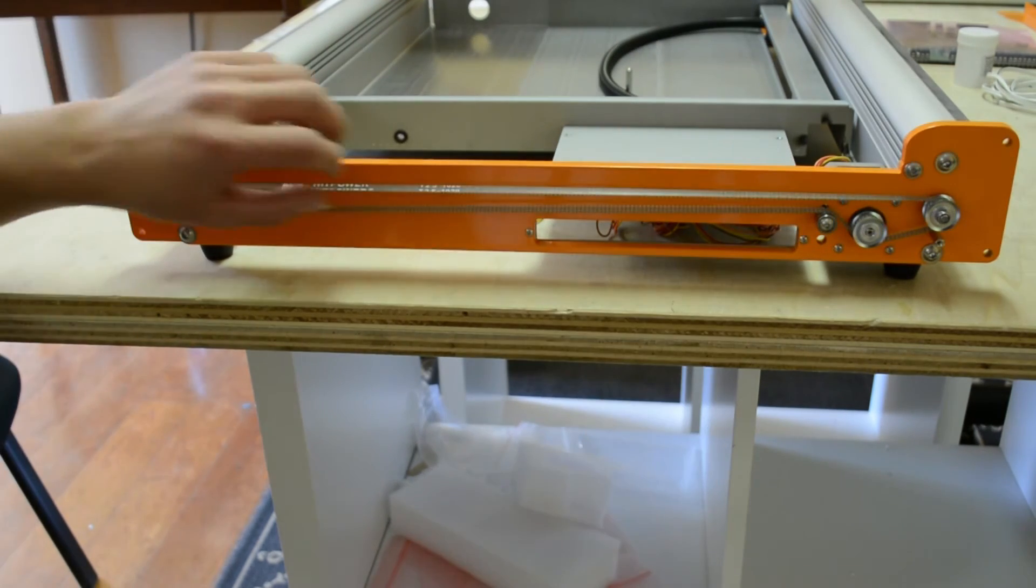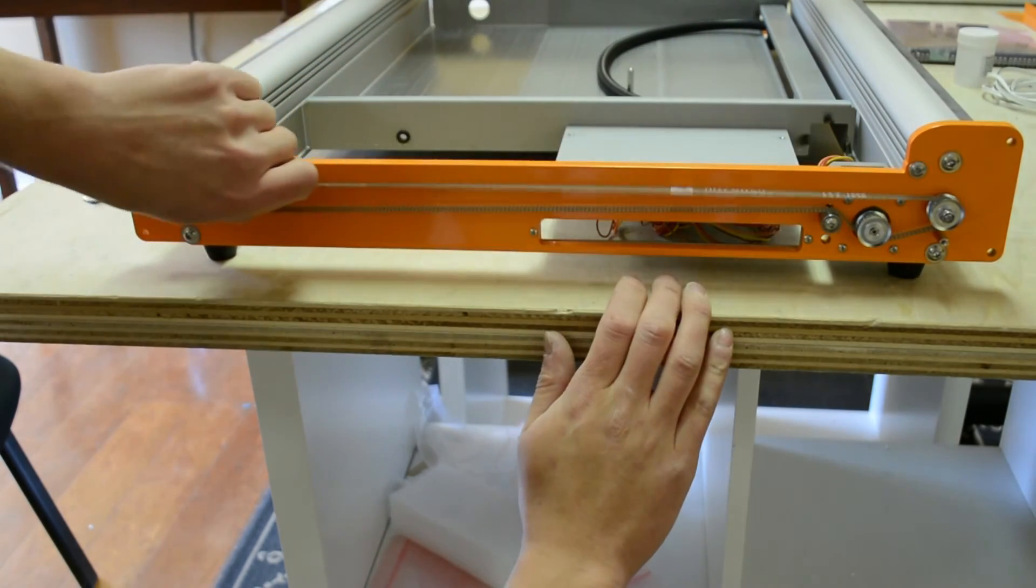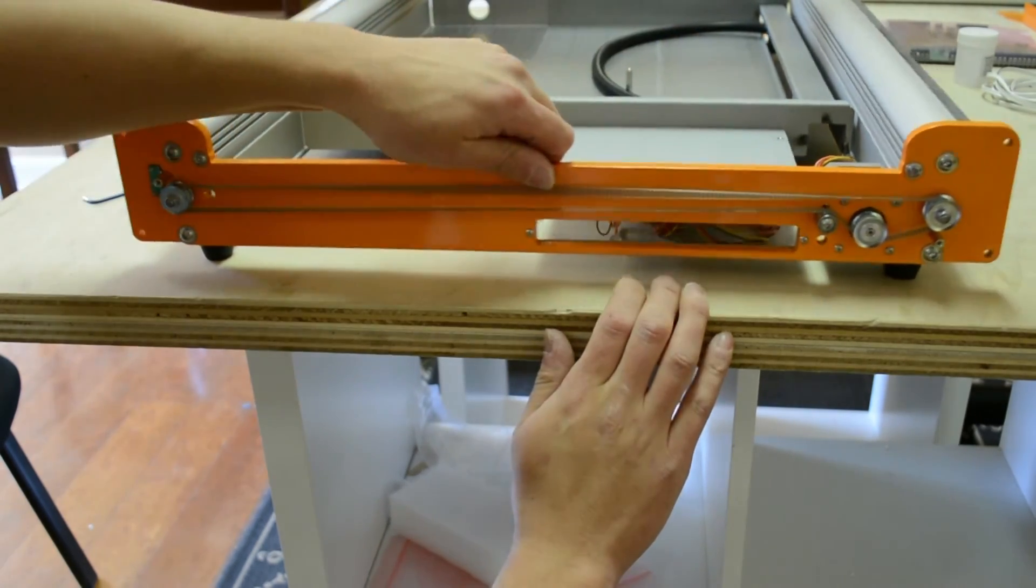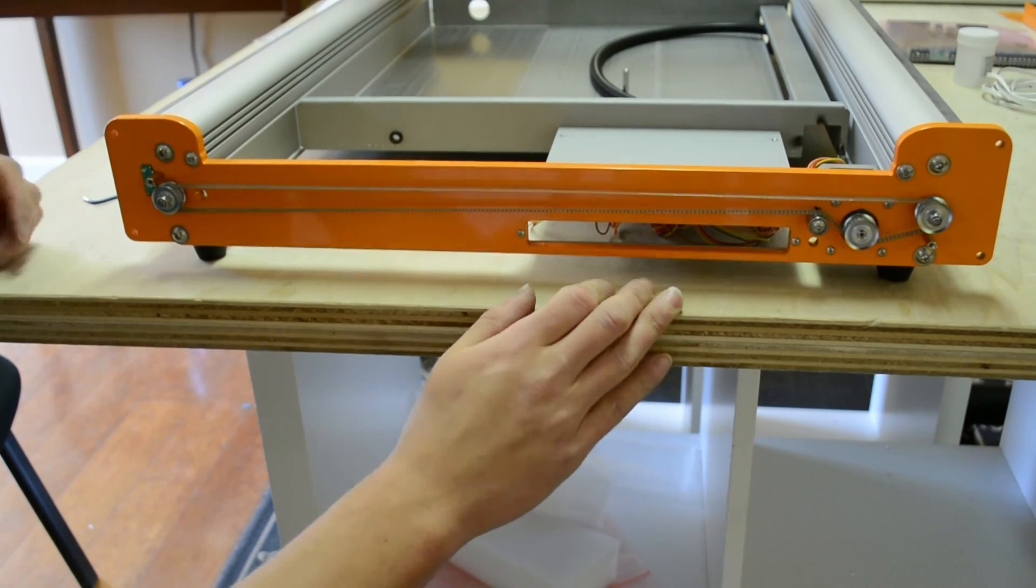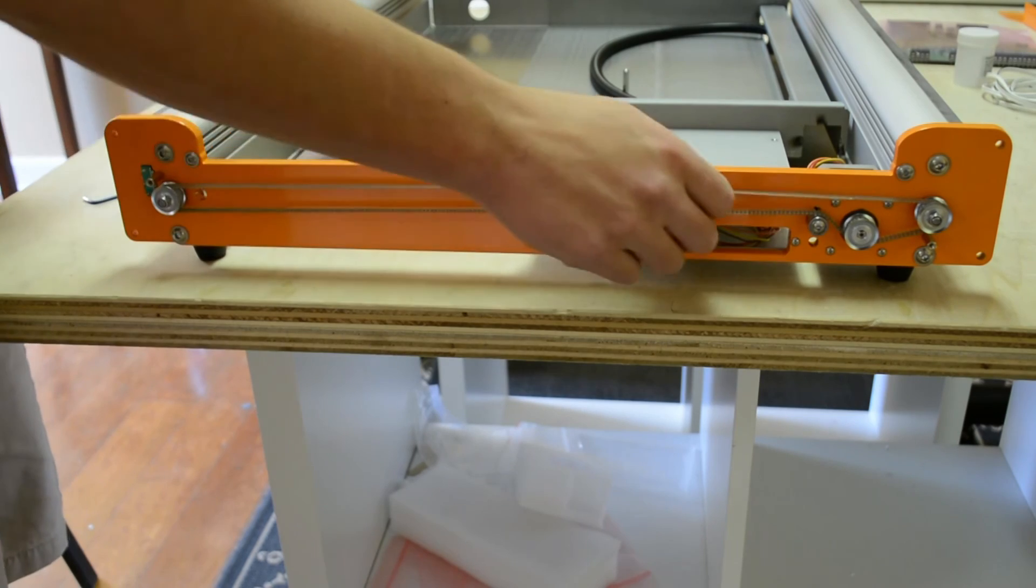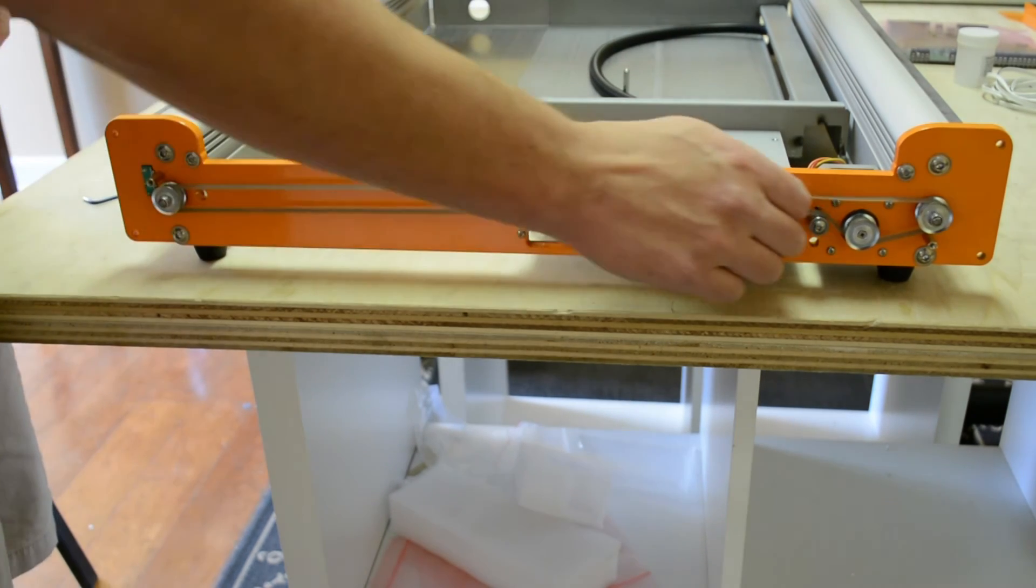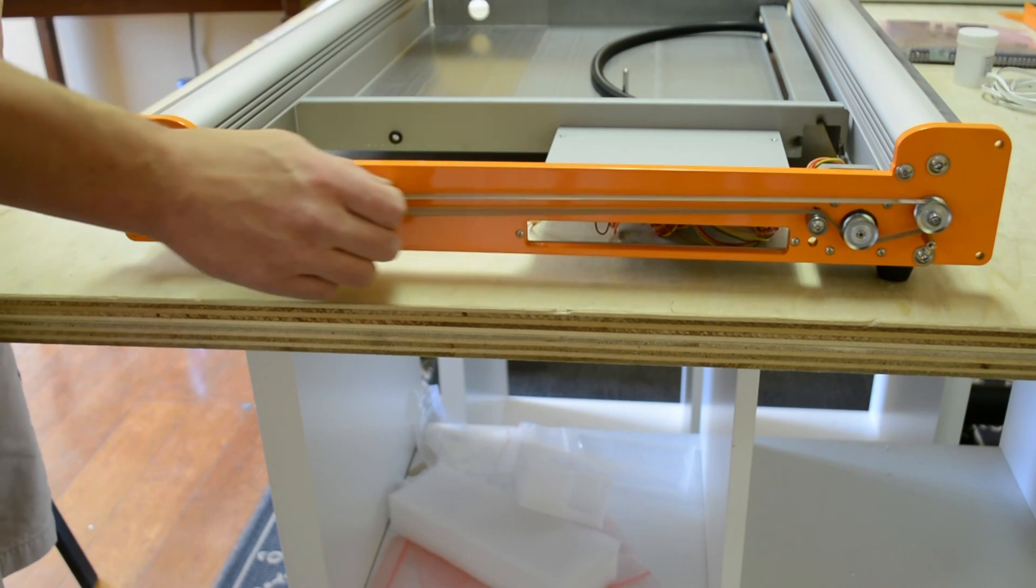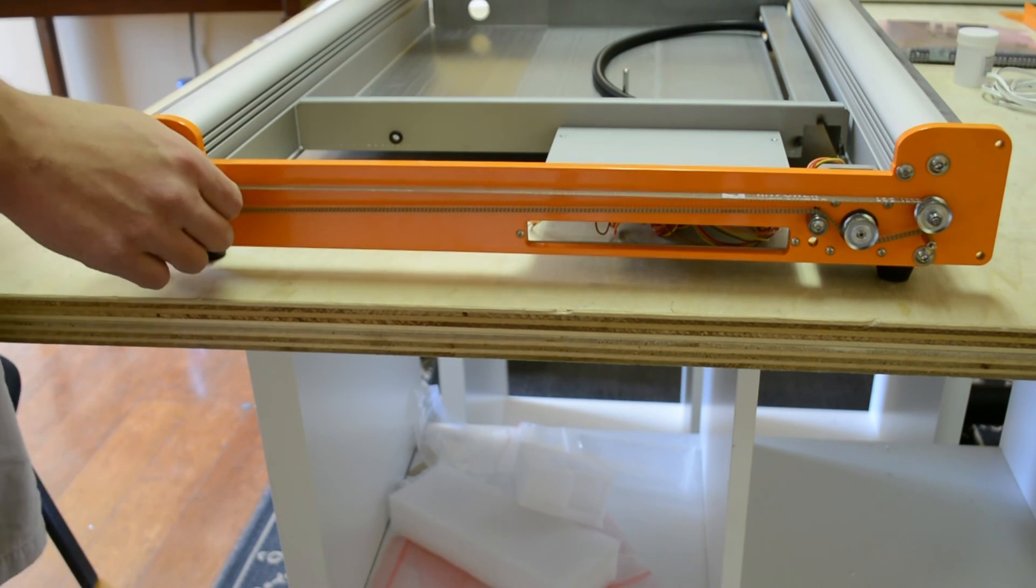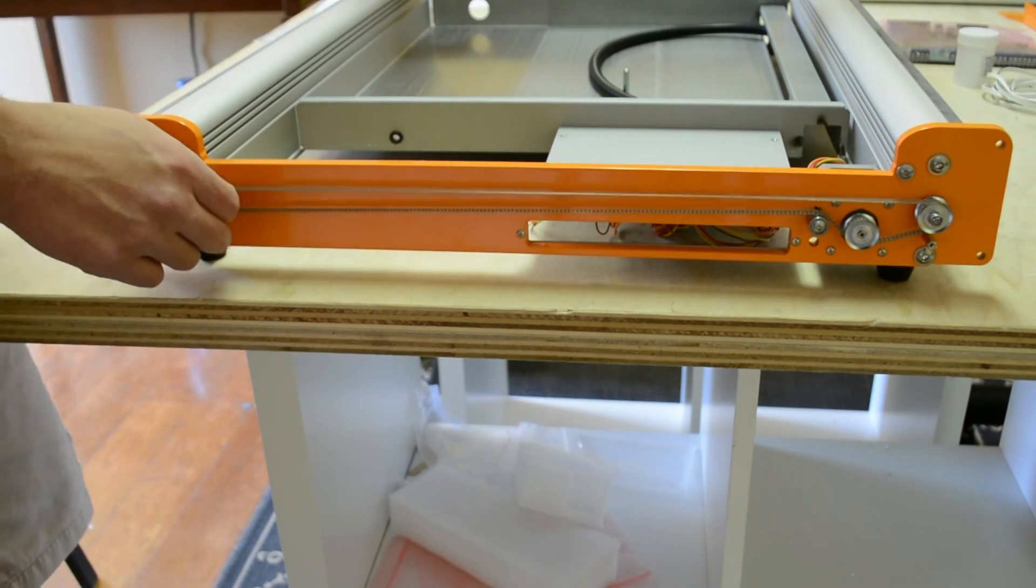So now with the gantry aligned, I'm able to move the machine. What you want to be able to do is this should be smooth enough to allow you to move the machine back and forth smoothly, not a lot of resistance. And you should be able to move it without it pushing the machine on the table.